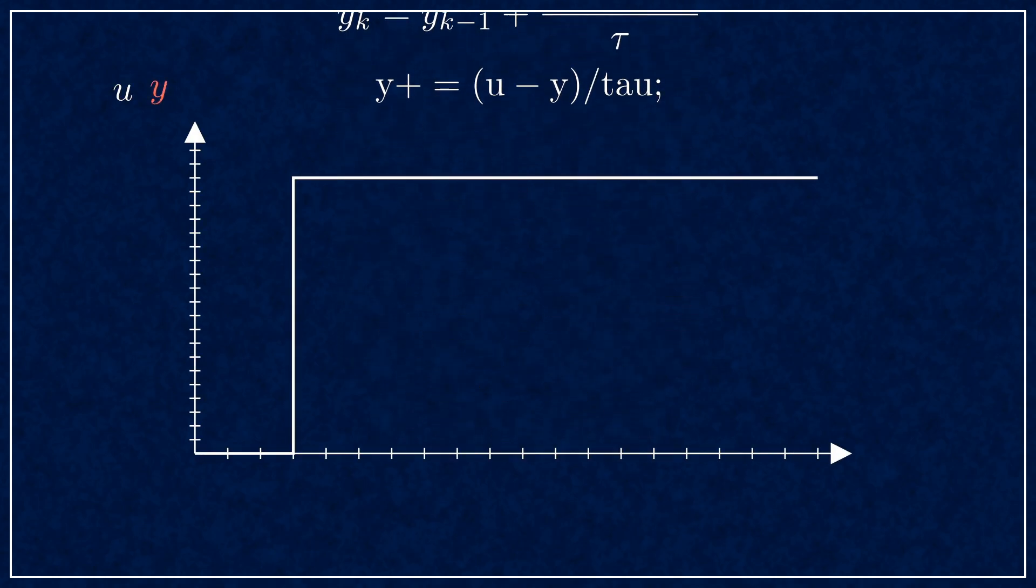Here's the filter step response when the time constant equals 2. It goes halfway to the input every step. Increase that to 4, now it goes quarter way towards the input every step.